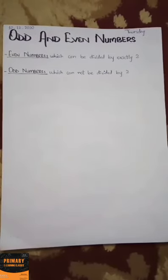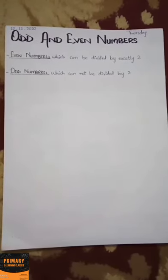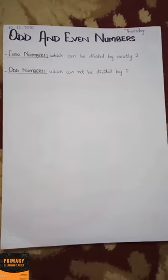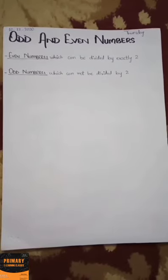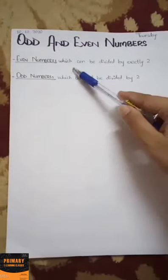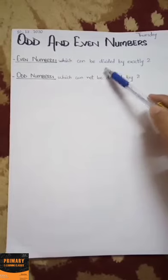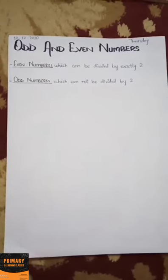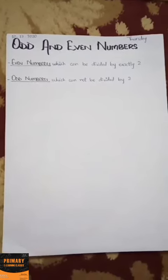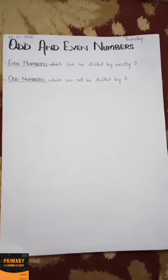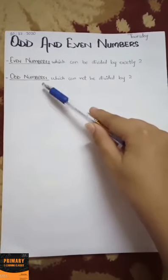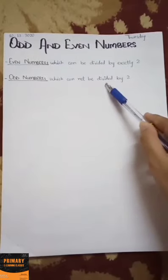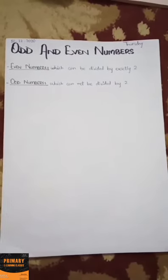Assalamu alaikum students, this is your maths class. Today our topic is odd and even numbers. Even numbers are numbers which can be divided by exactly two, or you can say that an even number is one which can be divided into two equal groups. Odd numbers are numbers which cannot be divided by two, or which cannot be divided into two equal groups.